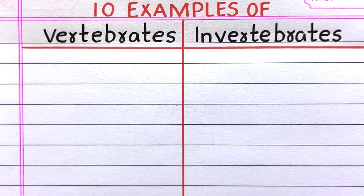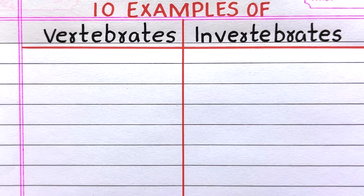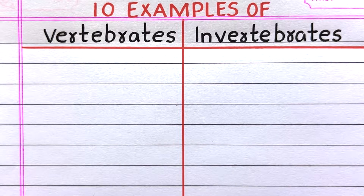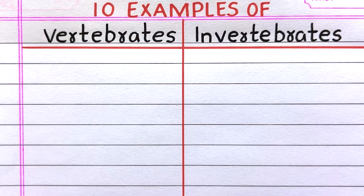Hello everyone, welcome to my channel 10 Lines Essay. Vertebrates and invertebrates are two categories of animals. Vertebrates are animals with backbones, while invertebrates are animals without backbones. Here in this video, I will write 10 examples of vertebrates and invertebrates. Let's get into the video.